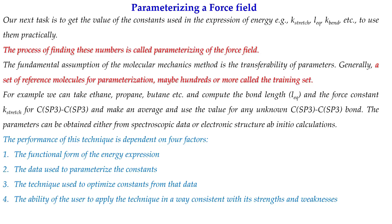Parameterization is done using a training set of molecules. For example, to parametrize a C(sp³)–C(sp³) bond, we take ethane, propane, and butane. We obtain the C–C bond length from spectroscopic data or higher-level ab initio methods, then average the values from all three molecules. This average becomes the equilibrium bond length l_eq, which can then be applied to any unknown molecule containing a C(sp³)–C(sp³) bond.